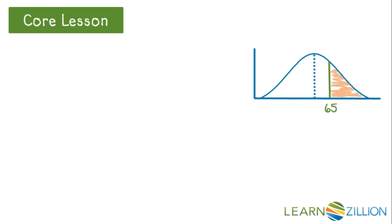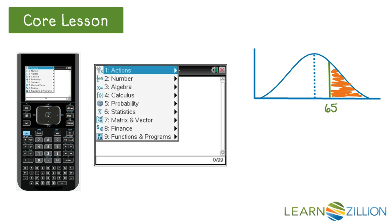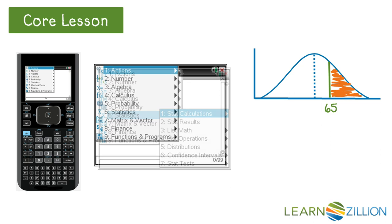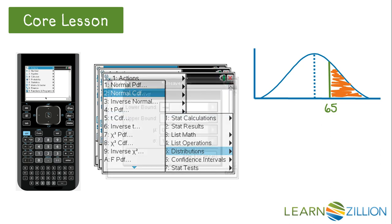We can solve this problem by making a quick sketch and then pulling out our graphing calculator. Don't worry if your graphing calculator looks different from the one shown here — all modern graphing calculators have statistical functions and can perform these calculations. On this model, we start by pressing the menu button and then use the menus that appear on the screen. We choose Statistics, then Distributions, and then Normal CDF.